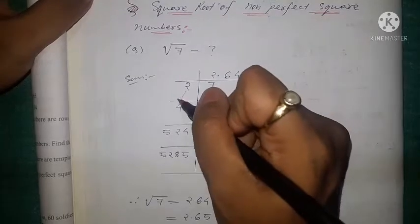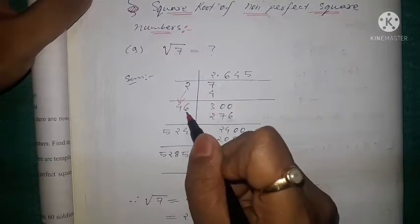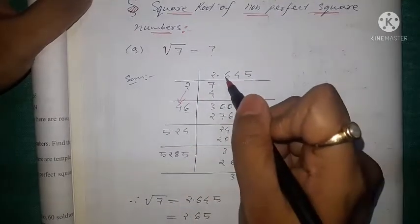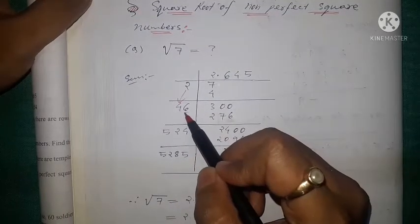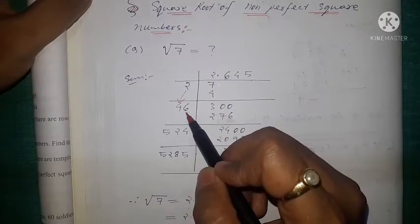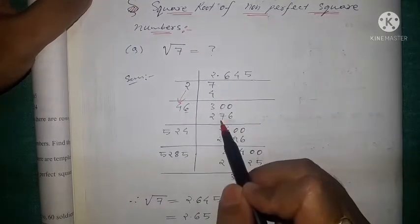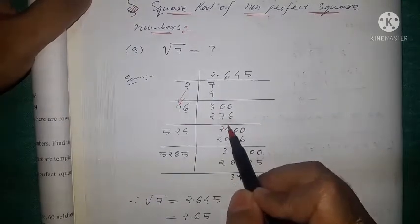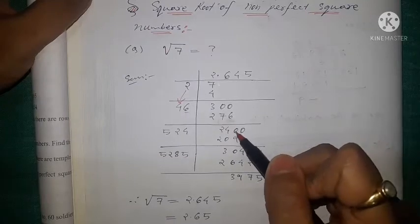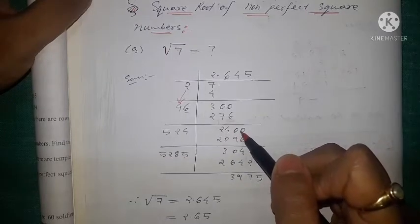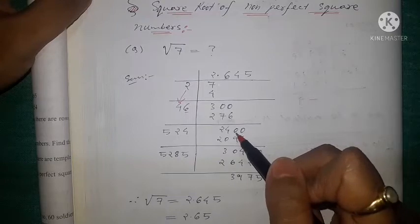This 2 is doubled, it becomes 4. Whatever number we multiply here, the same number we write in the divisor. So we multiply by 6: 46 × 6 = 276. Therefore the remainder is 24. Again we take a pair of zeros — we cannot take a single zero — so it becomes 2400.